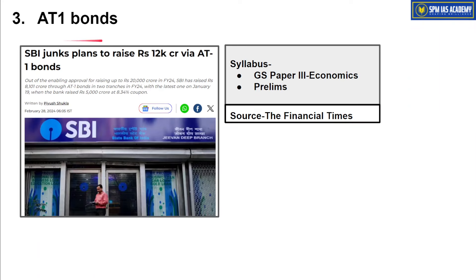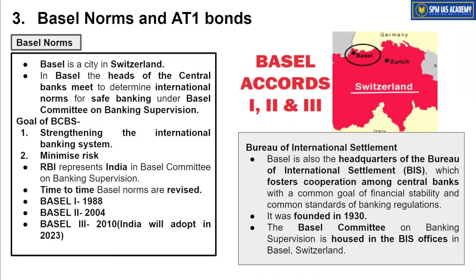The next article is about AT1 bonds: 'SBI junks plan to raise ₹12,000 crore via AT1 bonds.' This news is not very important from an exam point of view, but I'm covering this article to explain AT1 bonds. This topic is related to Indian economy. To understand AT1 bonds, we first need to understand Basel norms.